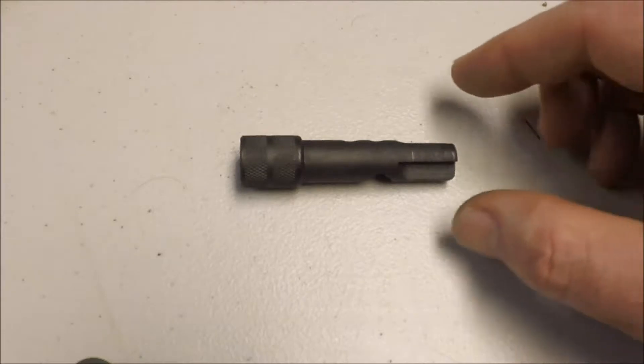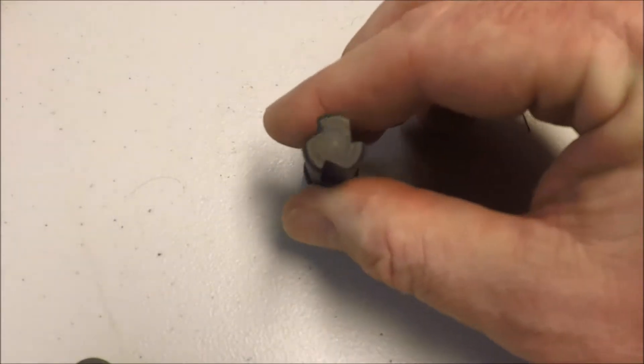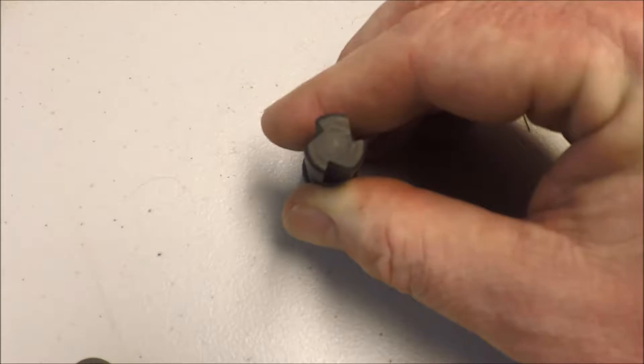First, with the scrapers down on this end here, you put those into the bolt carrier group and that scrapes out the carbon in there where the bolt interfaces with the bolt carrier group.